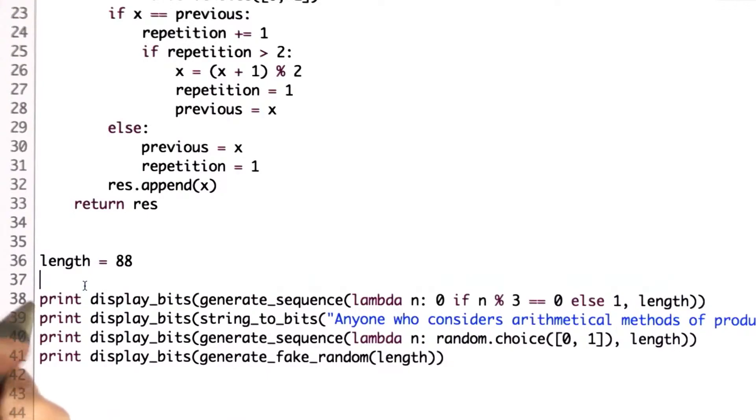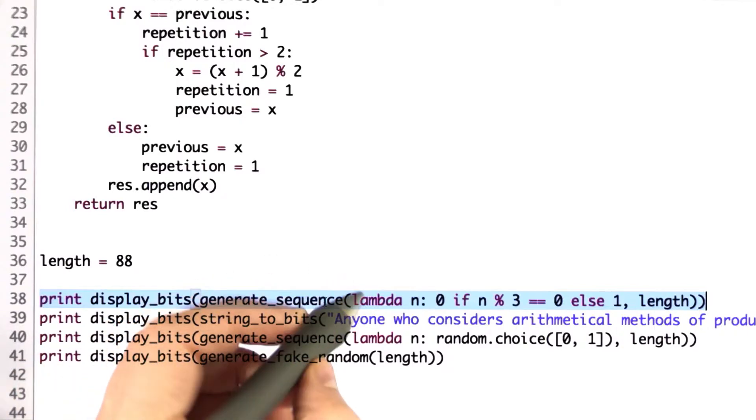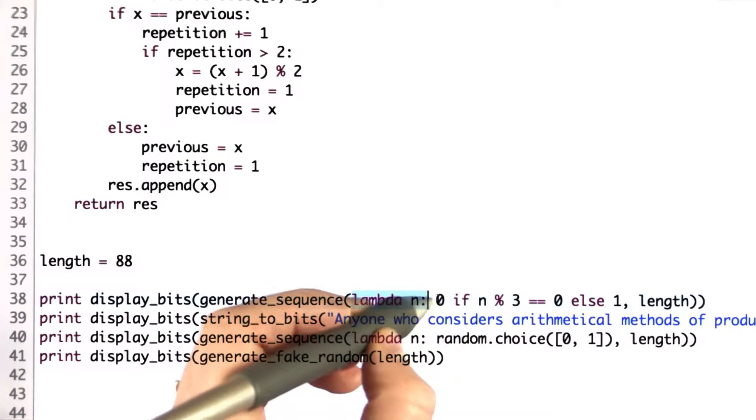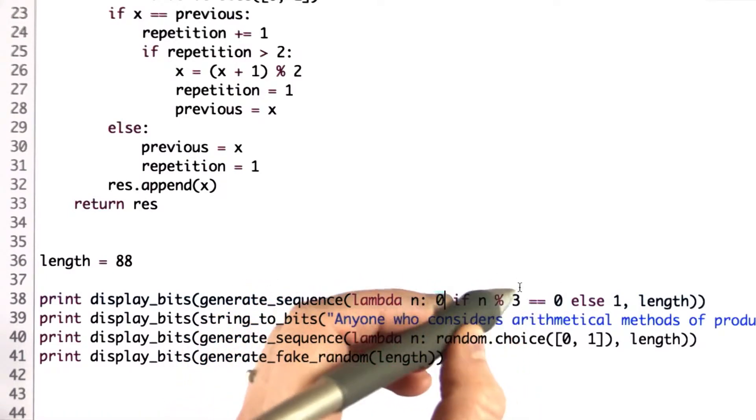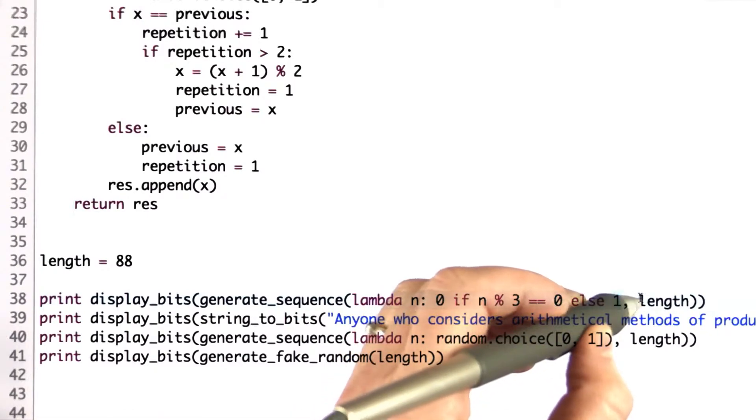Here's how I generated each of those sequences. The first sequence was generated by generating a sequence. I'll show you what generate sequence does next. But for each position in the sequence, the procedure that generates the output generates 0 if the position is divisible by 3. Otherwise, it generates 1. And we do that for the length of the sequence, which is defined as 88.